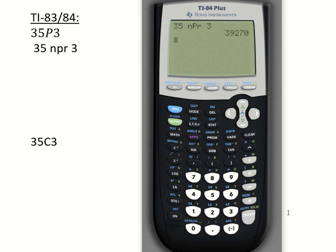So similarly, you can find the 35C3 by using the NCR function. So you will first type 35, and then go to math, and then all the way to probability, and choose the NCR function, and 3, and enter, that's the answer for 35C3.